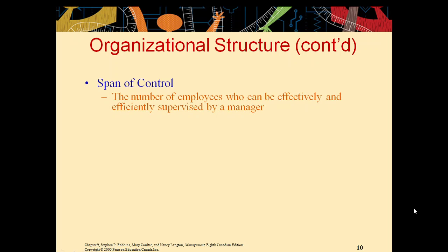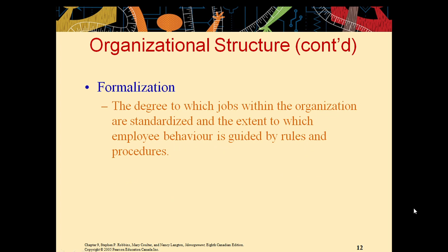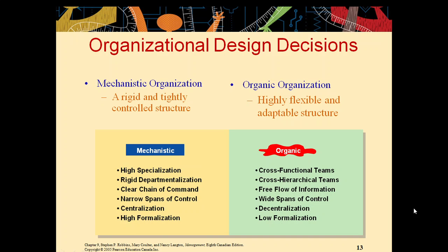Span of control is the number of employees who can be effectively and efficiently supervised by a manager. Centralization and decentralization, and formalization, have been discussed. Mechanistic and organic structures differ as follows: mechanistic is highly specialized, rigid, with a clear chain of command, narrow spans of control, centralization, and high formalization; whereas organic is cross-functional, cross-hierarchical, with free flow of information, wide spans of control, decentralization, and low formalization.